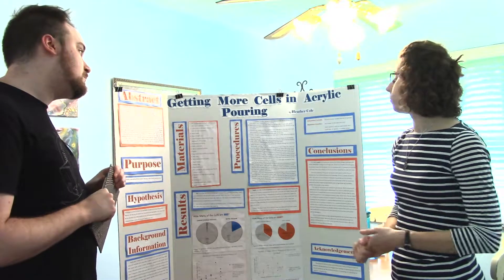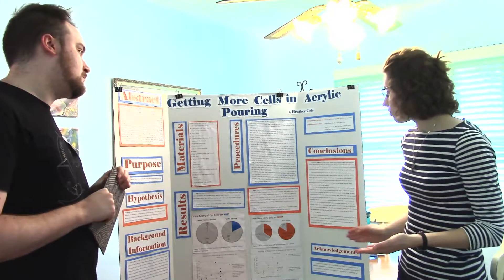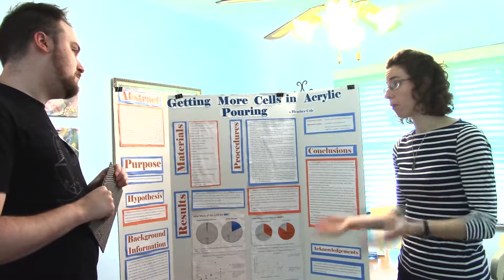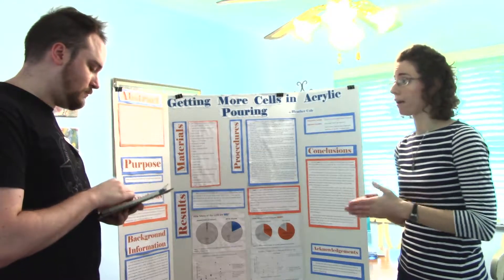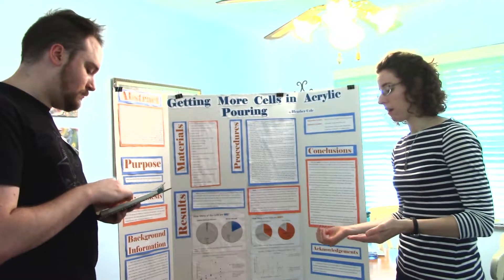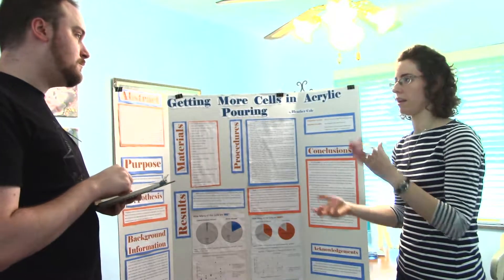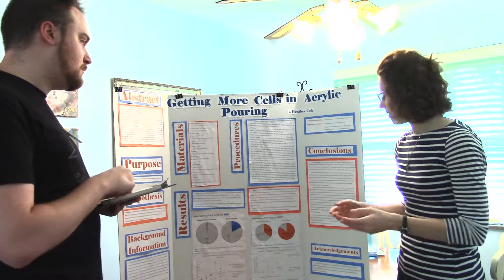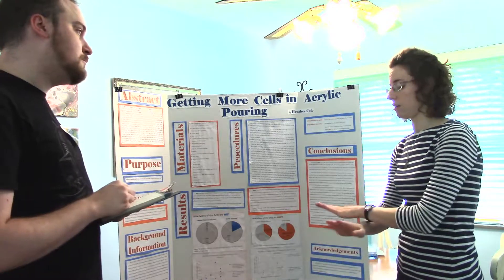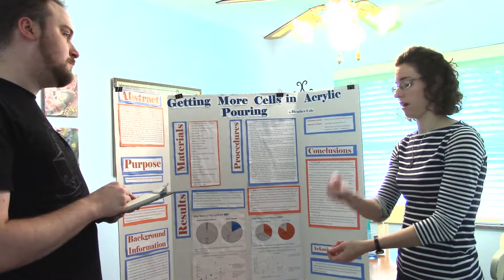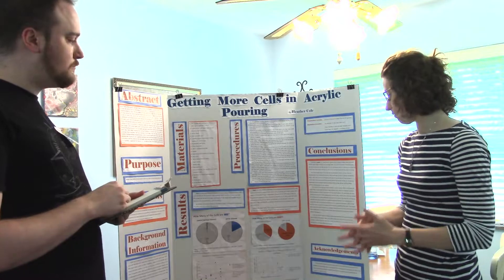My independent variable was the amount of silicone oil I added, and I measured the size and the depth. In conclusion, my results supported my hypothesis. I think this study could be improved if I had a better way of counting the cells, because I sometimes may have double-counted a cell while waiting for something to dry. One idea I had was to count after everything was dried and to put a piece of plastic wrap down and use a marker to mark the locations.